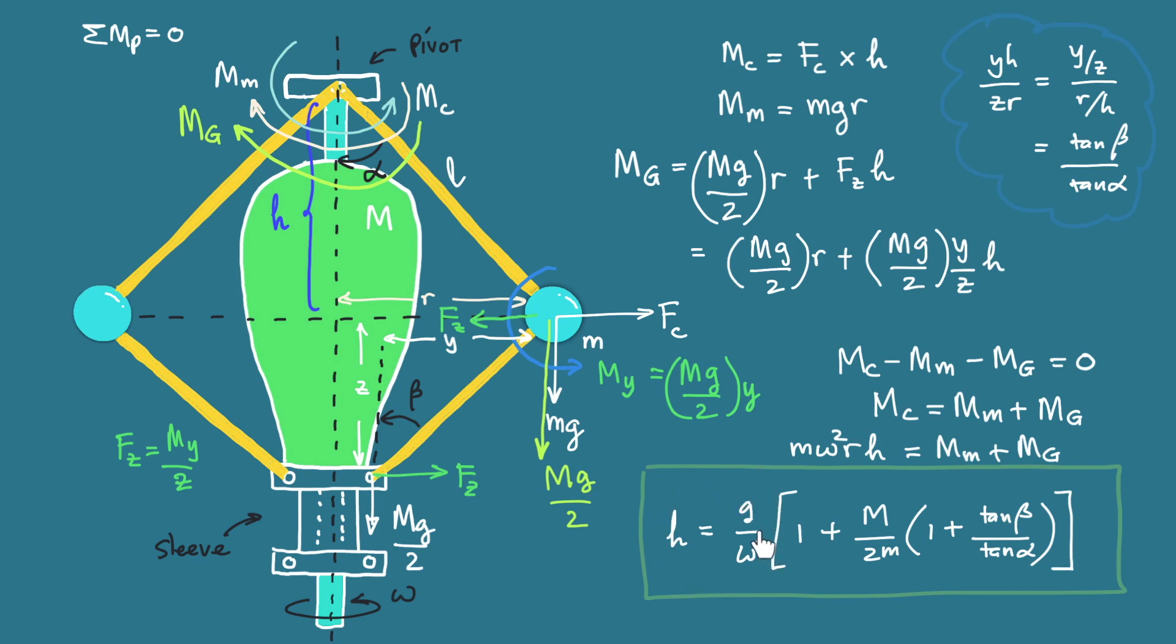This informs us that if we have large omega or high speed of rotation, we have small value of H, which means the height is getting small because the sleeve is moving up, so higher as well as the ball. This can create instability to the system.